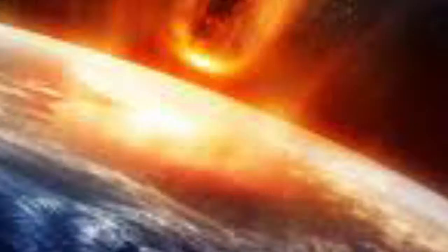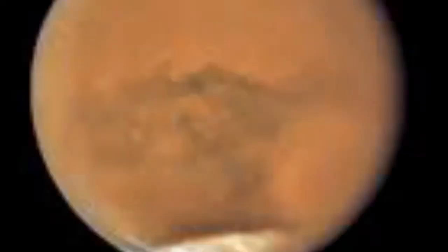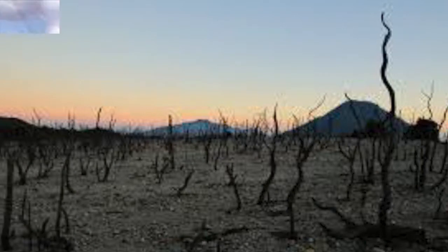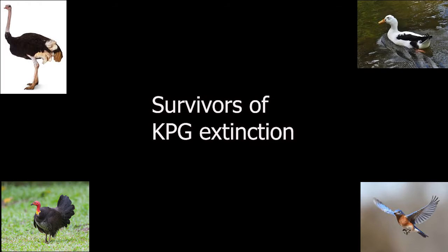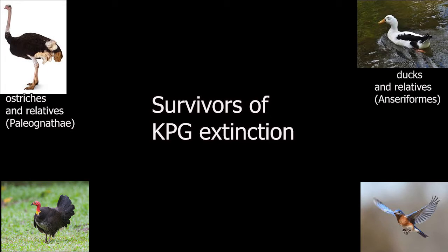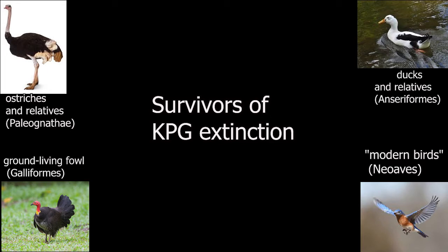Without the sun's energy, entire plant communities died, and the animals that relied on those plants perished with them. When the meteor crashed into the planet, it created a lot of dust in the atmosphere, which disrupted food chains. Plants did not get enough sunlight to grow, so dinosaurs that relied on those plants also died. However, four distinct lineages of birds survived the K-PG extinction event 66 million years ago, giving rise to ostriches and relatives, ducks and relatives, ground-living fowl, and modern birds.